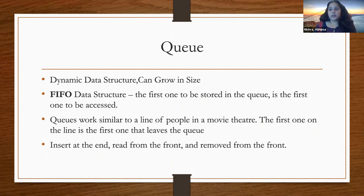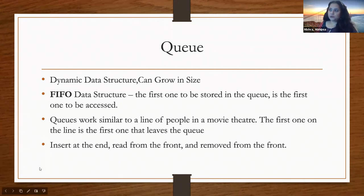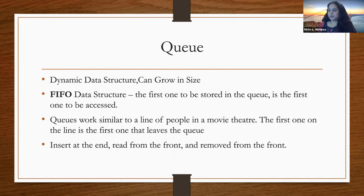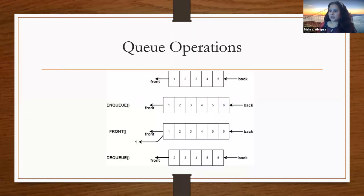Moving on to queue. Queue is also a dynamic data structure, but how it differs from a stack is that it is a FIFO — first in first out — data structure. The first one stored in the queue will be the first one accessed. You can think of a queue working like a line of people at a movie theater, where the first one in line enters first and leaves the queue. You insert things at the end, but you can read and remove from the front.